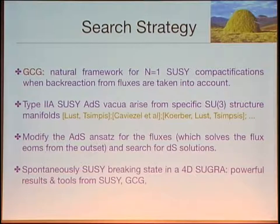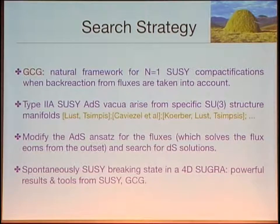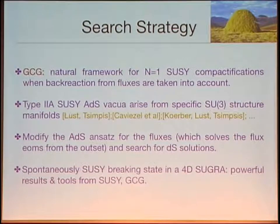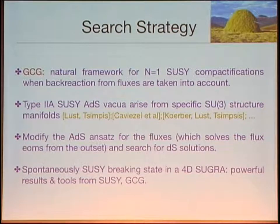We are now ready to search for the minimal de Sitter solutions. Since the background fluxes back-react, a natural framework is generalized complex geometry. Many SUSY AdS vacua are shown to arise from specific geometries in this context. Our strategy is to modify and improve the ansatz for the fluxes and search for de Sitter solutions. If we find solutions from our analysis, they should correspond to spontaneous supersymmetry breaking states in the four-dimensional supergravity, which we can analyze using powerful tools from supersymmetry.